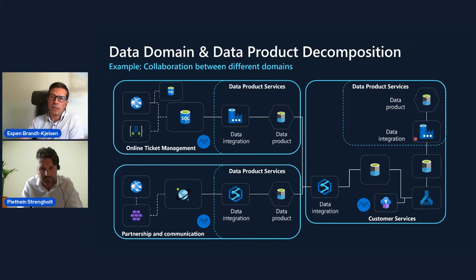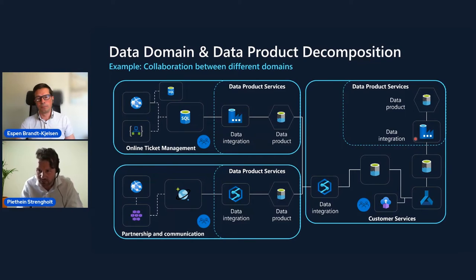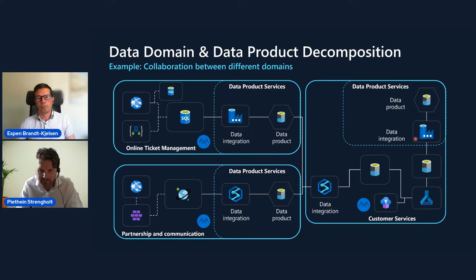In each one of these, I see you have data product services — would you please explain those? Those services are really needed to create such a data product. In an Azure context, you could see this as a resource group with a bunch of pre-configured services. This typically also comes from a template, like Emerson referred to in the beginning — we need to make this template-based in order to excel and accelerate. This is what these data product services are for, and in a way, this is also what cloud scale analytics is for.